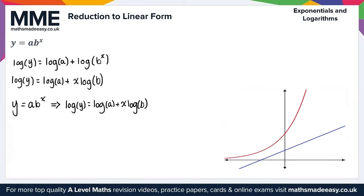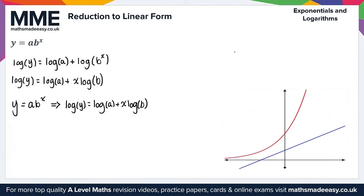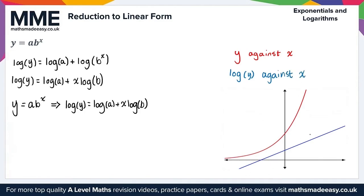This graph shows y against x in red, and in blue we have the straight line log y against x. That gives us everything we need for the form y equals ab to the power of x. And that concludes this Maths Made Easy video on reduction to linear form.